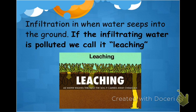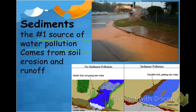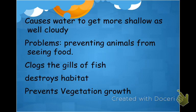When you think leaching, think polluted water soaking into the ground. Sediment is the number one source of water pollution in North Carolina — that is very important to know. As we urbanize areas, we remove vegetation. Vegetation prevents erosion because roots anchor the soil down. When you remove plants, you remove that anchor and dirt can get washed away into bodies of water.